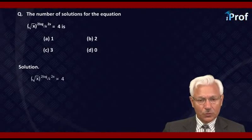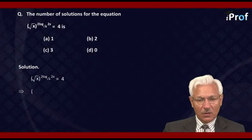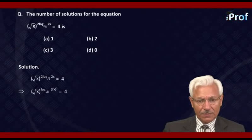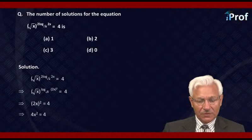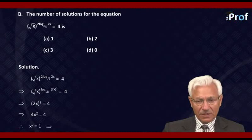We can pull out 2 and get it into the power. That is, root x raised to the power log of (2x)² to the base root x, is equal to 4. That means 2x² is equal to 4, or 4x² is equal to 4, which gives us x² equal to 1, or x is equal to ±1.